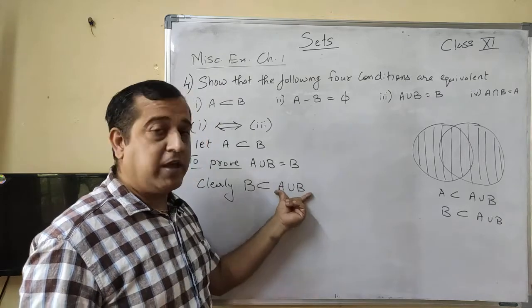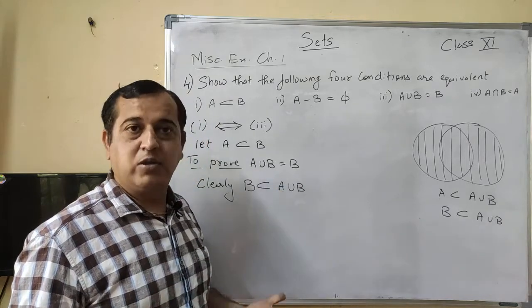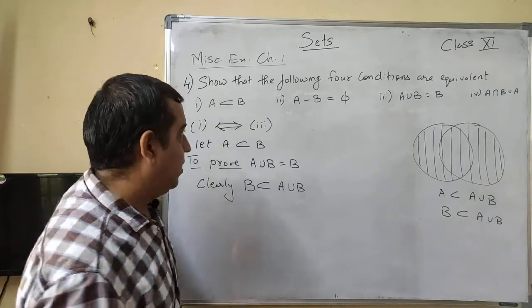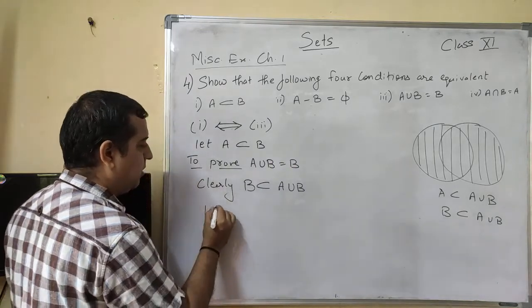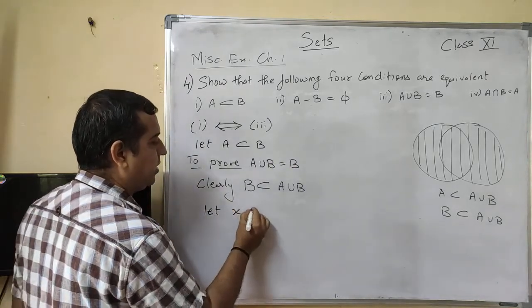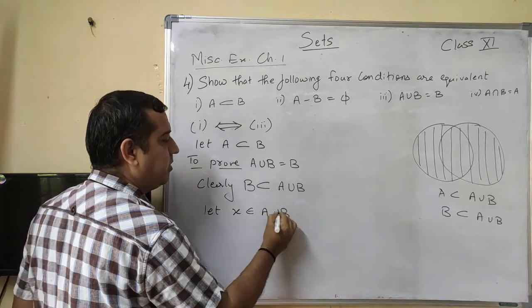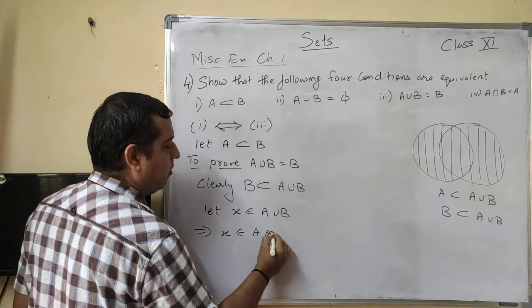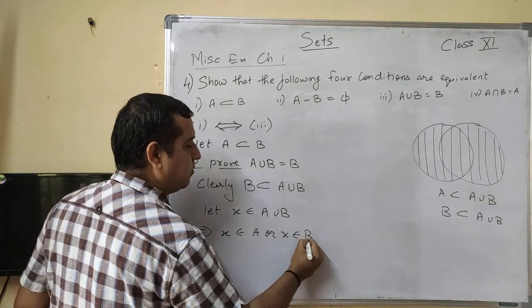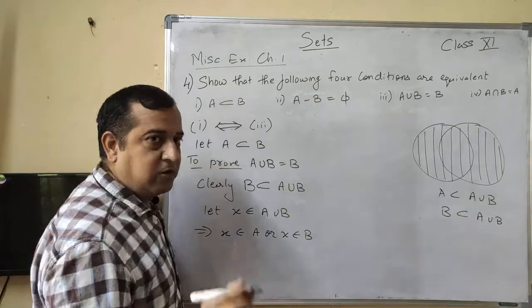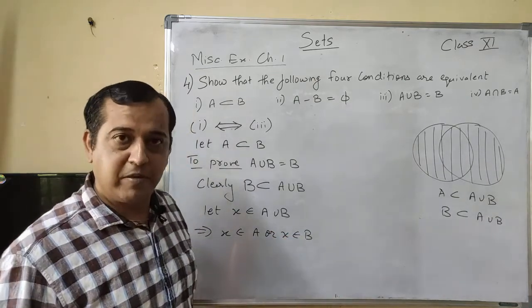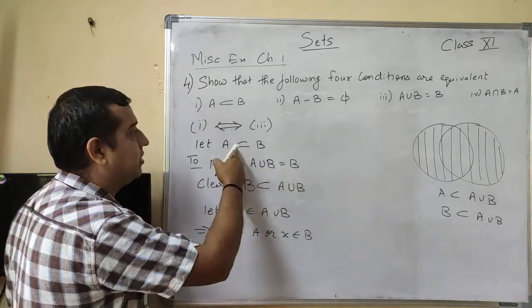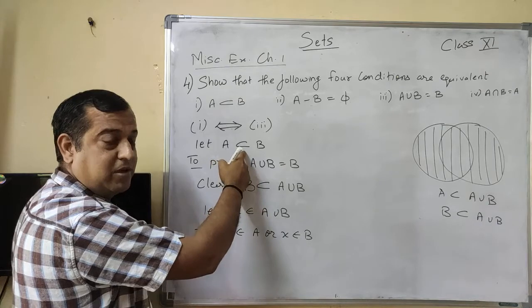हम reverse prove करेंगे कि A ∪ B, B का subset है. अगर ऐसा हो जाता है, तो दोनों equal हो जाएंगे. उसके लिए हम क्या करेंगे? Let x ∈ A ∪ B. हमारा assumption क्या है? A ⊆ B.